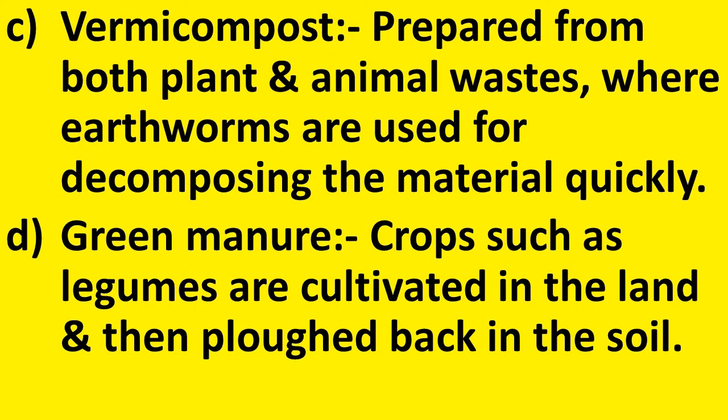The next type is vermicompost, prepared from both plant and animal waste where earthworms are used for decomposing the material quickly. The earthworms increase the decomposition rate so we get the decomposed material quickly. The next one is green manure, where crops such as legumes are cultivated in the land and then ploughed back into the soil to increase fertility, especially the nitrogen component.